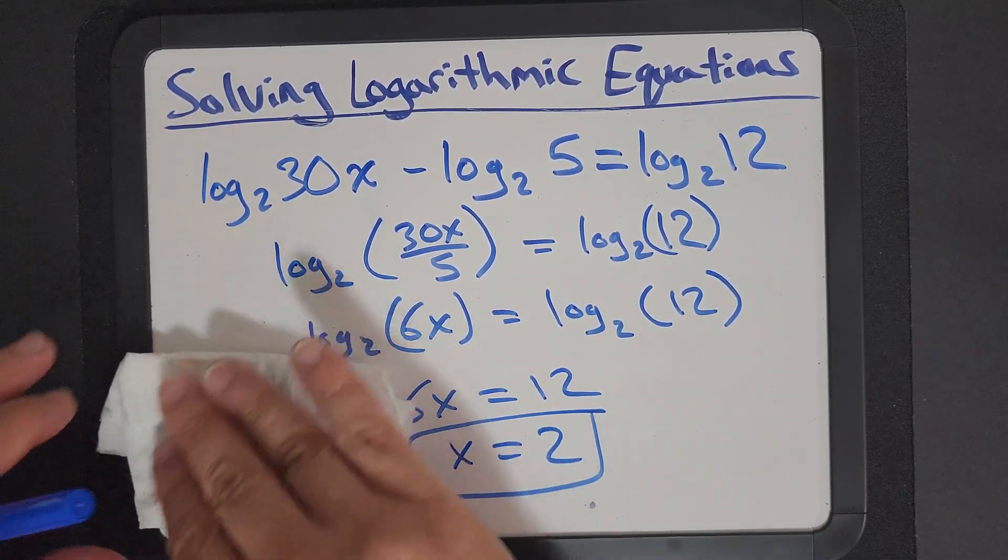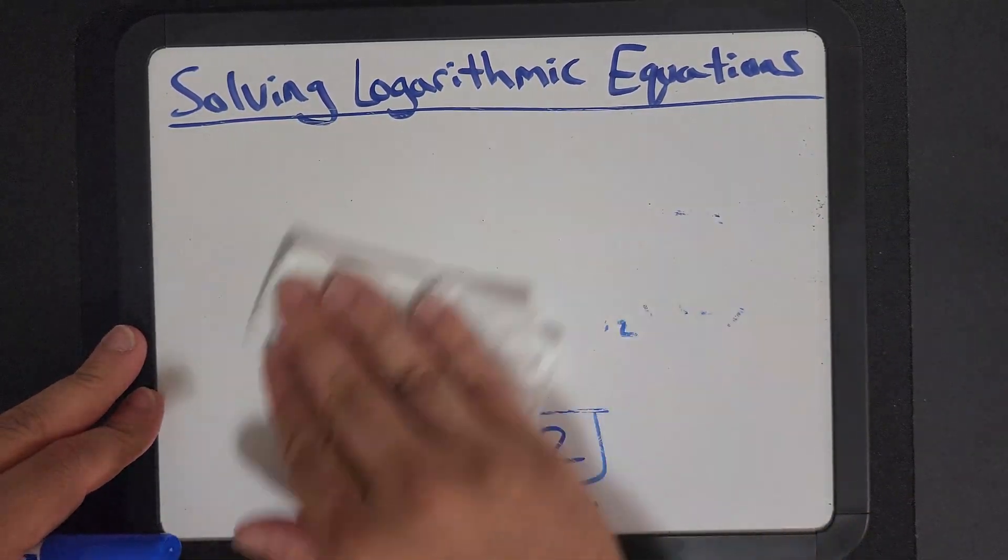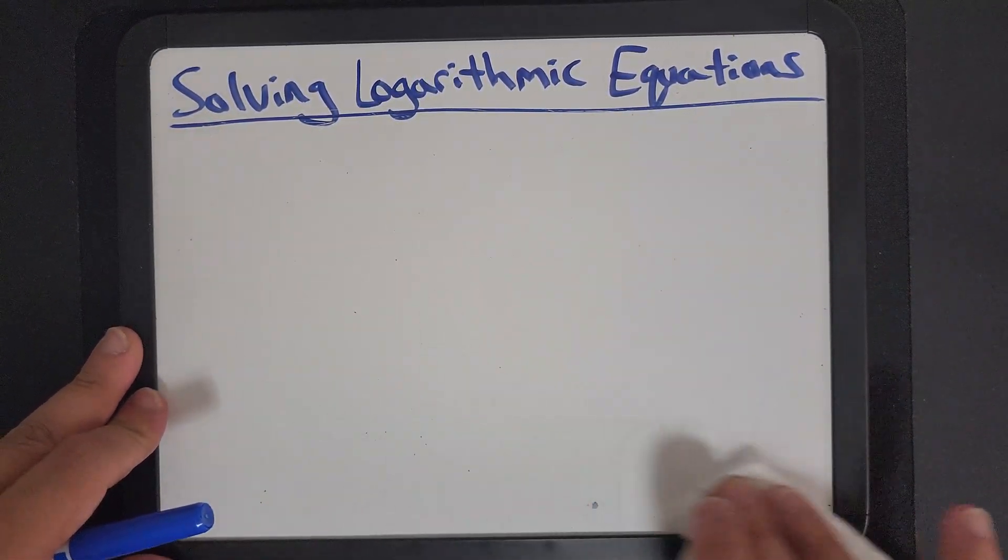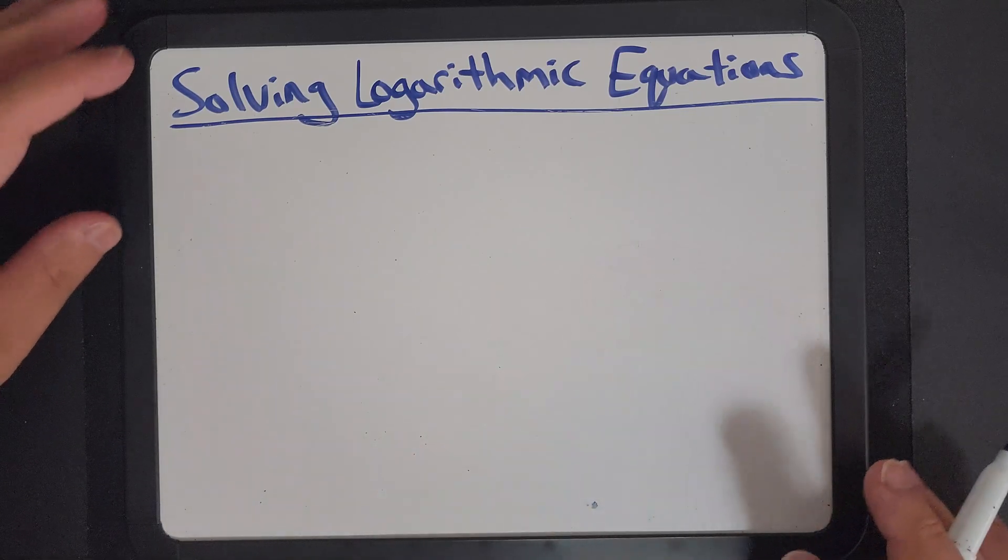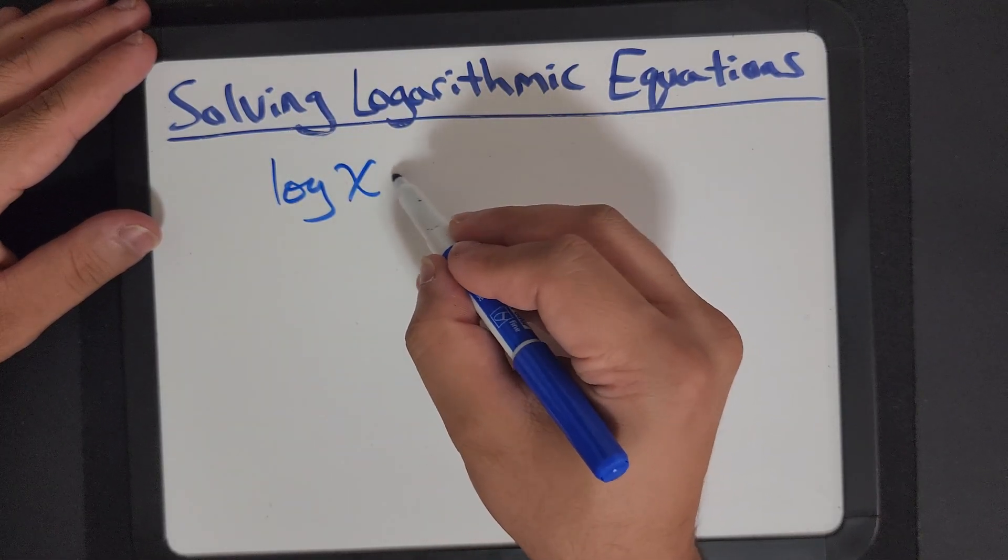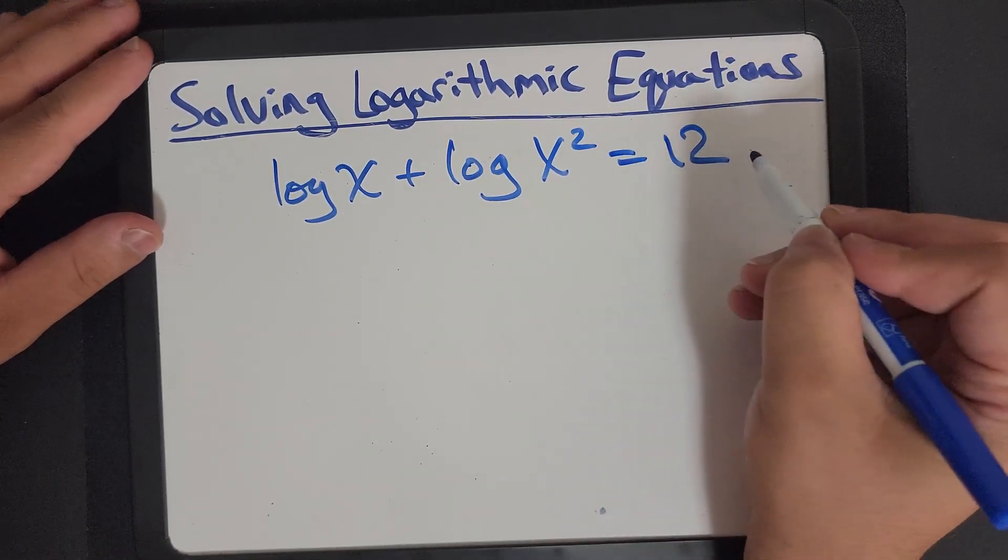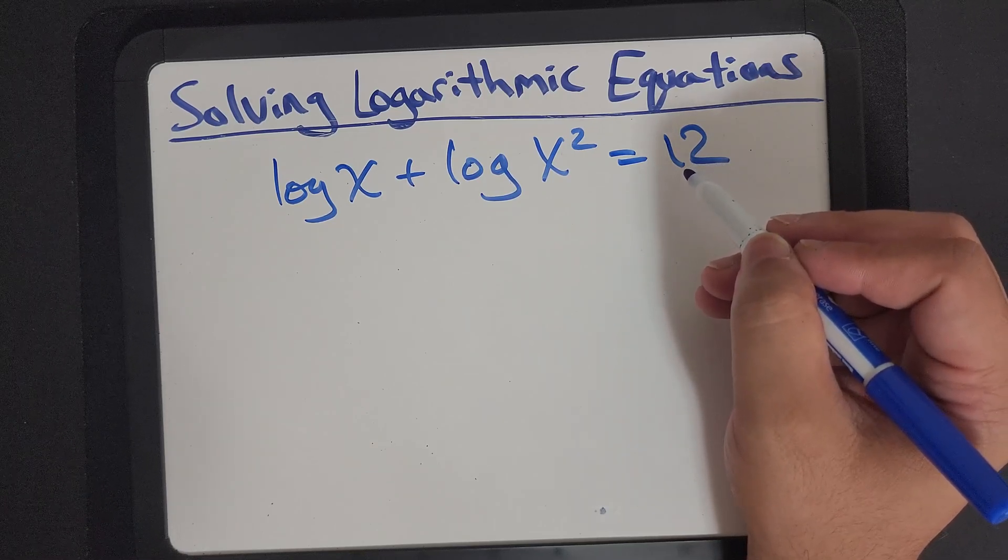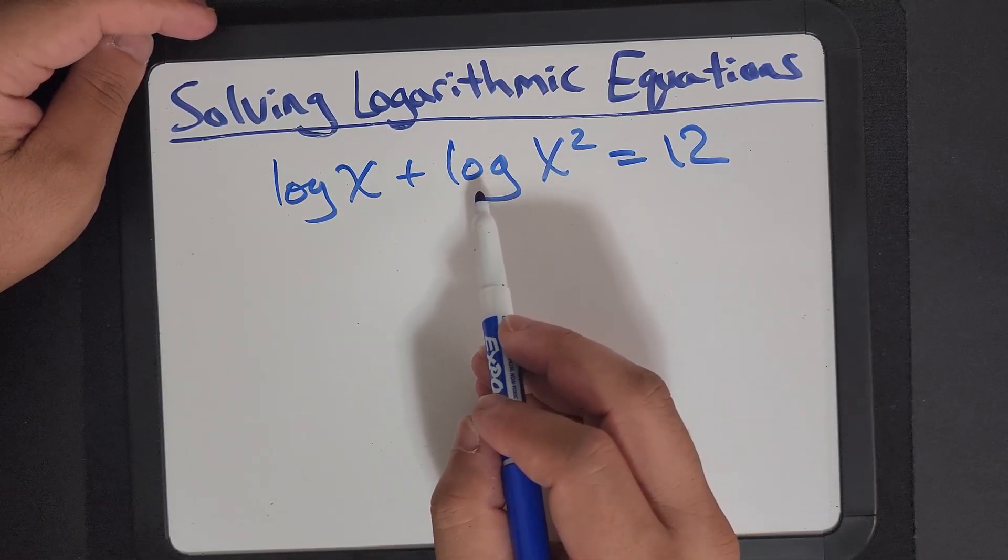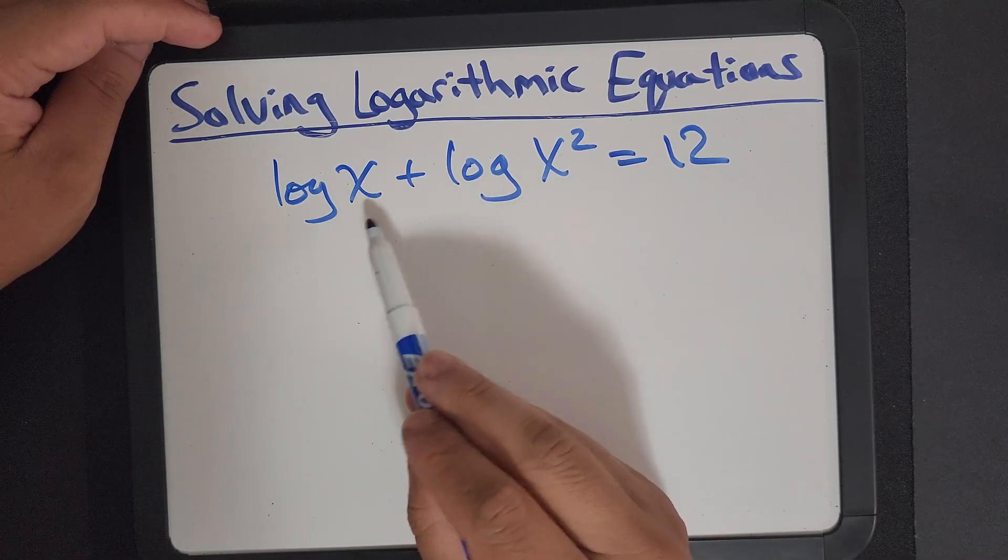So let's do it again. Let's see, we have log x plus log x squared equal to 12. So if you remember our addition formula, then you remember that we have, oh sorry, our product log.